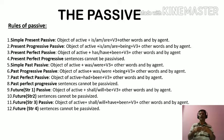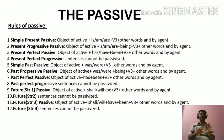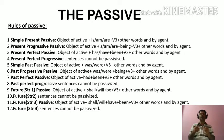Now let me acquaint you with the rules of the passive. First of all, simple present passive. In simple present passive, the structure is: the object of active plus is, am, or are plus past participle form of the verb plus other words and by agent.